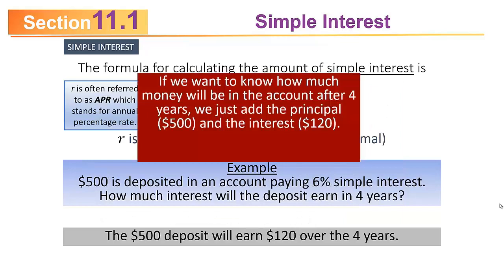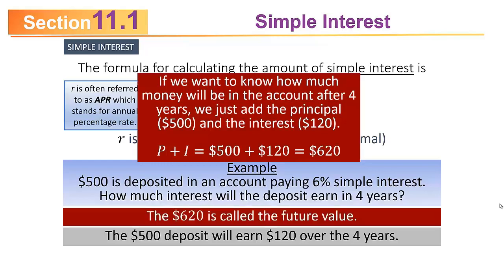Sometimes you don't want to know just the amount of interest you earn. Sometimes you'll actually want to know how much money is in the account after four years. To do that, we take the interest, which was $120, and add it back to the principal, which is $500. Principal plus interest gives you the amount in the account, which is $620. That $620 — the total amount in the account after a certain period of time — is called the future value.